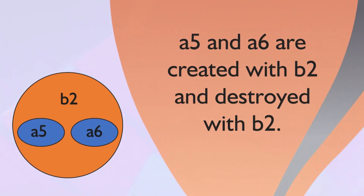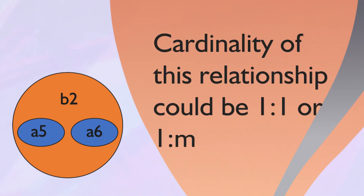A5 and A6 are created with B2 and are destroyed with B2. The cardinality of this relationship is either one-to-one or one-to-many — it cannot be many-to-many. The part side can be one or many, but the whole side is always exactly one. This is a private exclusive membership.